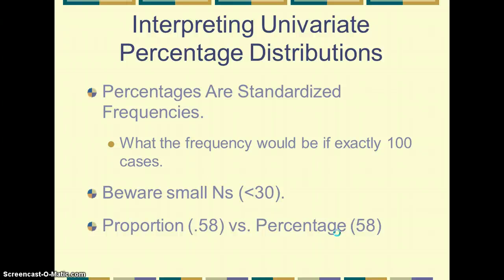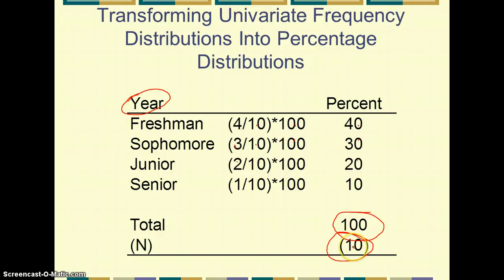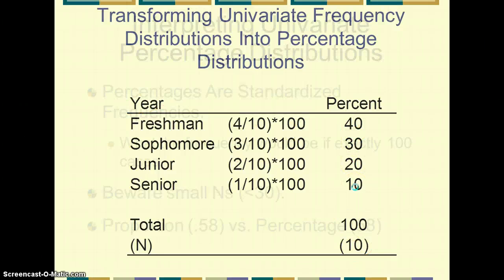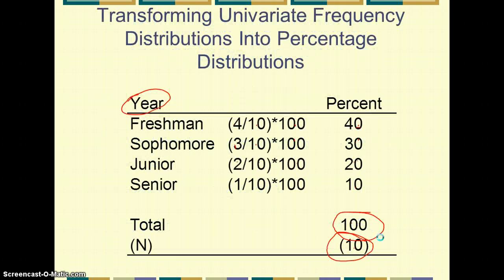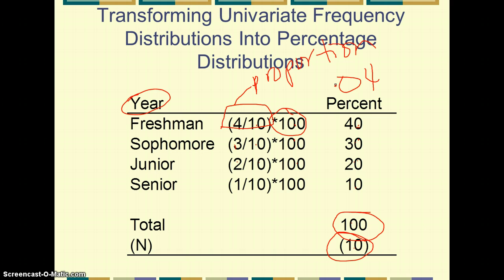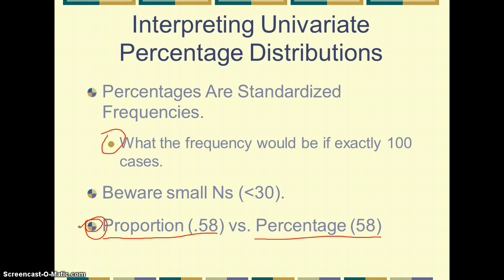Percentages are simply standardized frequencies — they show what the frequency would be if we had exactly 100 cases. With 10 cases, we'd have 40 freshmen, 30 sophomores, 20 juniors, and 10 seniors per 100. There's also a difference between a proportion and a percentage: 4 divided by 10 equals 0.4, which is a proportion. When you multiply by 100 and get 40, that is a percentage.